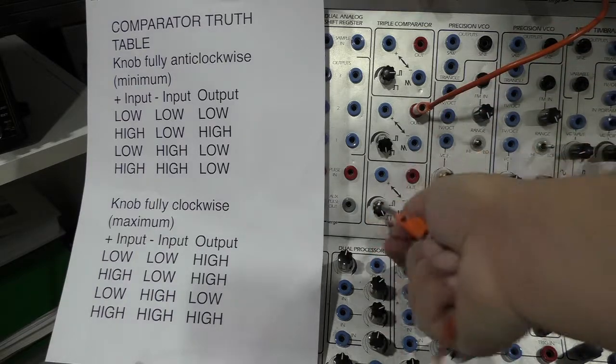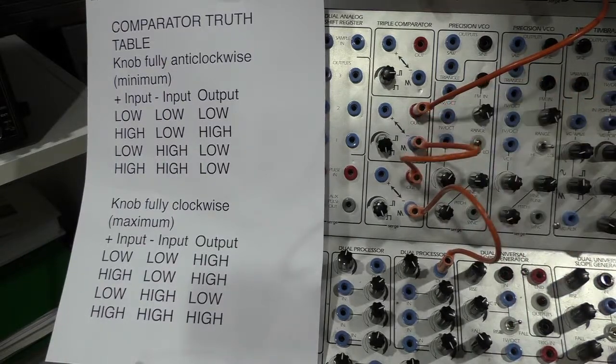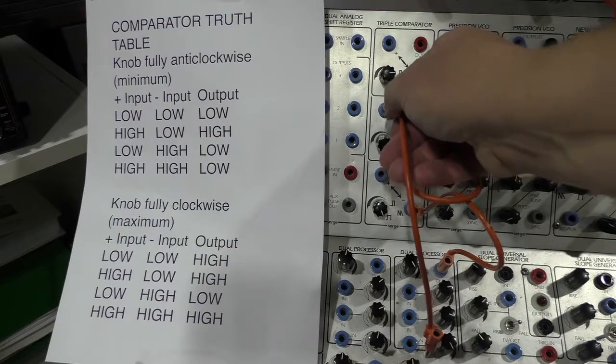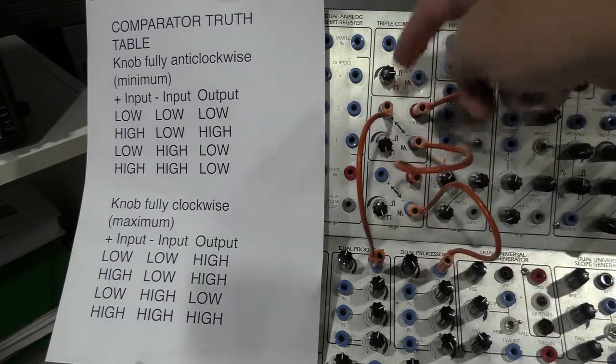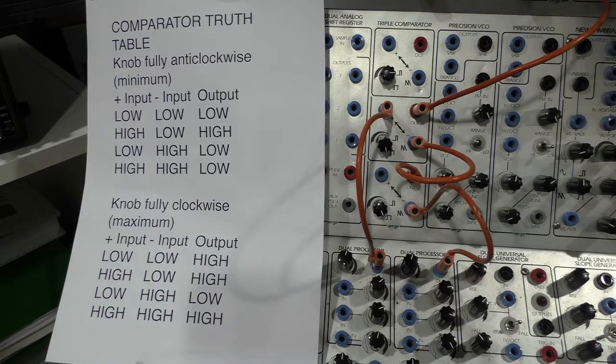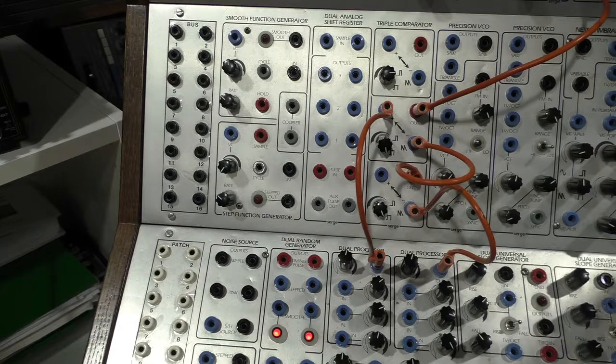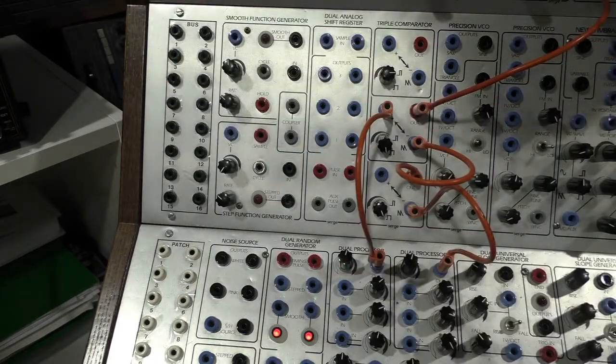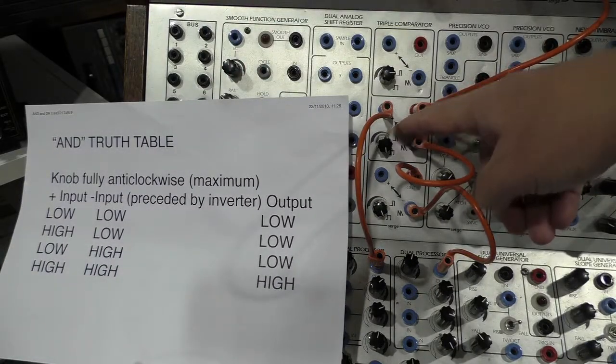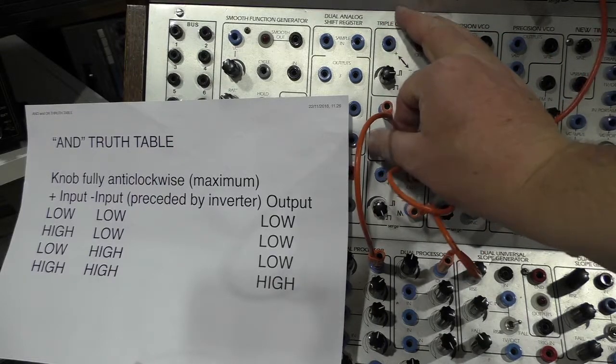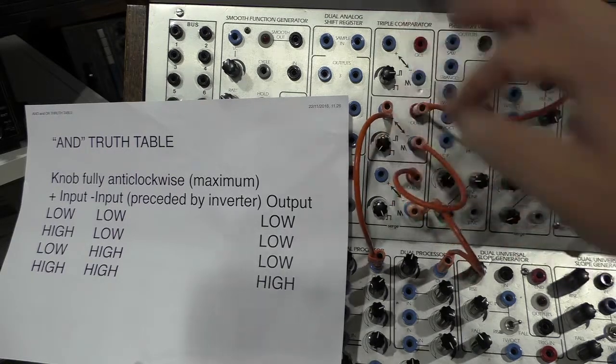So in the lower comparator, we have the knob turned fully clockwise and put that into the negative input of the second comparator. And then we put the voltage that we had before into the positive side. Now we have our logic gates. If we look at this truth table, with the knob of the comparator, that's to say the middle comparator, fully anticlockwise, it says anticlockwise maximum, anticlockwise should be minimum.